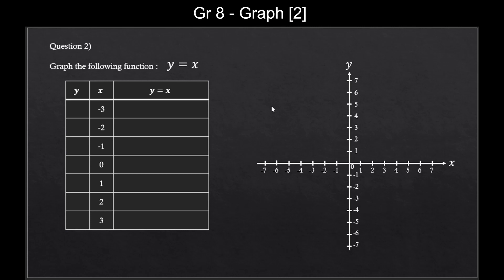Now let's try to find the y values. By the way, you may have noticed something by now. I keep assigning numbers to x then trying to find y values. Why am I doing that? Well, that's a deep question, and all I can tell you for now is that's how we graph a function. We could also assign numbers to y instead, then try to find the x values. But mathematicians prefer it this way, and you'll get used to this too.